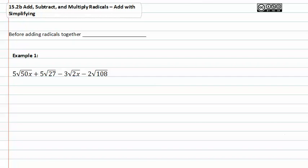Whenever you're combining like radicals, it's important to remember to always simplify what's inside the radicals first. We do this by prime factorization and then looking to see what can be pulled out of the radicals. Let's try example one first and grab some scratch paper to work each piece out.